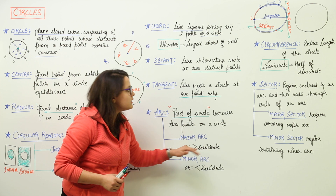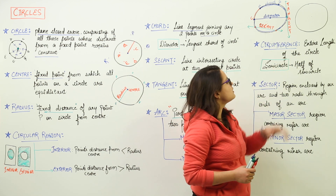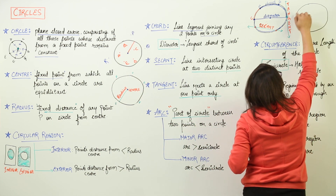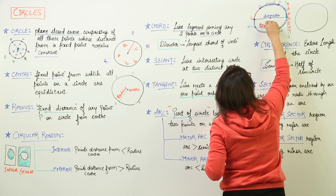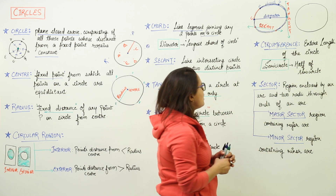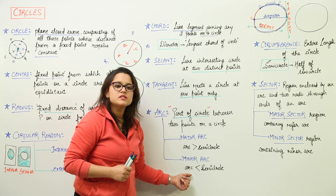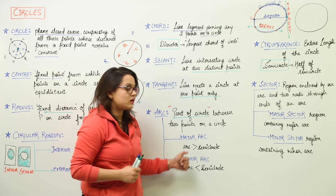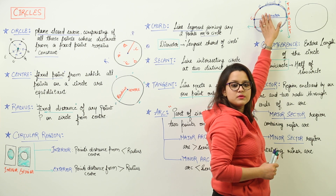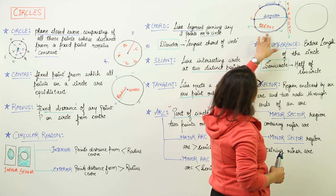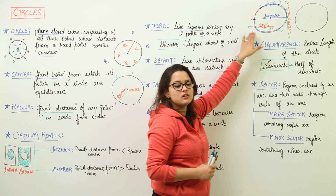If you have the arc greater than the semicircle, that will be your major arc. And if it is lesser than the semicircle, it is going to be your minor arc. In a semicircle, we have half the length of the circle. You can check over here — the red portion is lesser than the semicircular part, so that represents the minor arc. Whereas the blue portion is definitely greater than the semicircular part, so that represents the major arc.